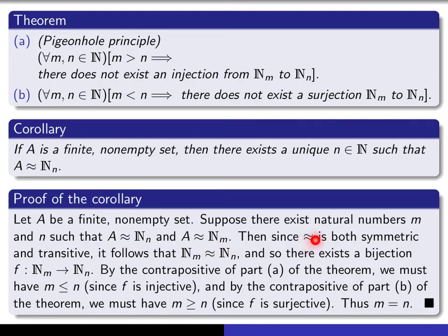Well, we know that this relation is both symmetric and transitive, so the fact that this is true and this is true, we can then deduce from the symmetry that we can reverse the order of these two things, and then we can apply transitivity to deduce that we get this.